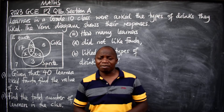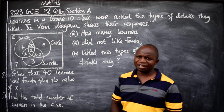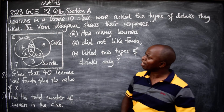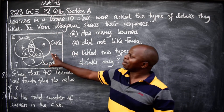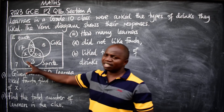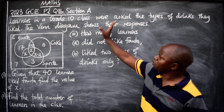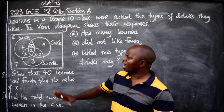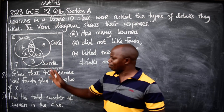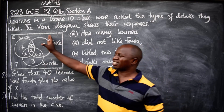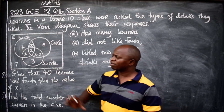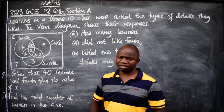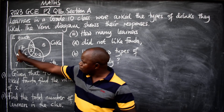This is a Sets question — identify the topic from which the question is coming from. With that in mind, let's proceed. This Venn diagram represents learners who were asked to choose the drinks that they like, and this was their response. Before we look at the questions, let's try to understand the meaning of this Venn diagram. We have three sets representing three drinks.